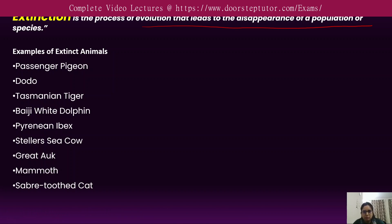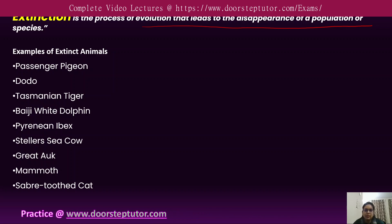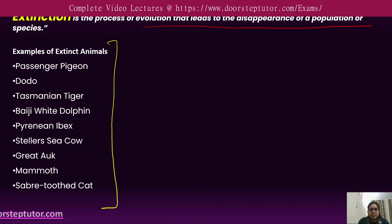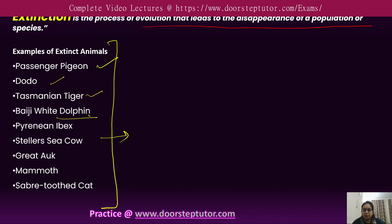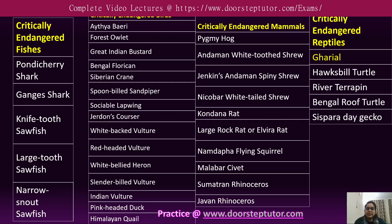Some species went extinct due to natural causes like climate change, while human activities such as overhunting and habitat destruction are also possible reasons for extinction. Examples of extinct species include the passenger pigeon, dodo, Tasmanian tiger, and the pygmy white dolphin.